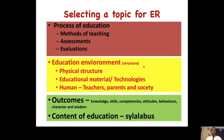Education environment has two components: a physical structure and a human structure. The physical includes buildings, classroom arrangement, education materials, IT technologies, and so on — all of which can influence education. Similarly, the human environment — teachers, parents, and the society — has a greater impact on education, especially when it comes to behaviors, attitudes, and character building, where teachers and parents play a major role.